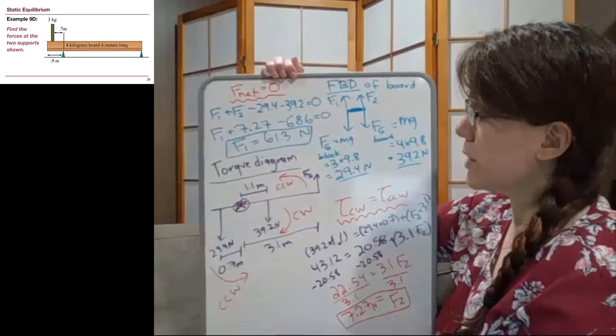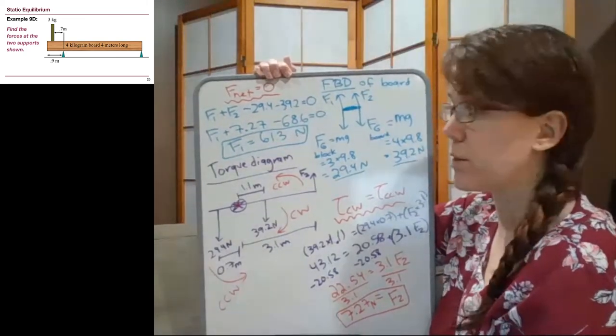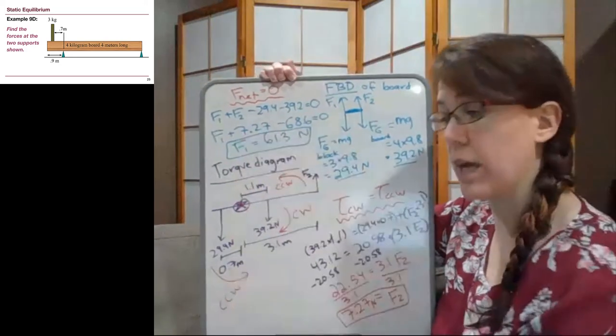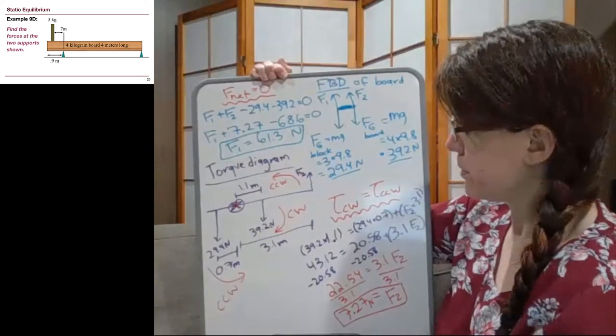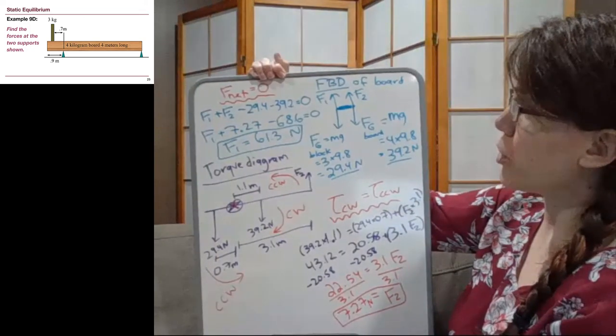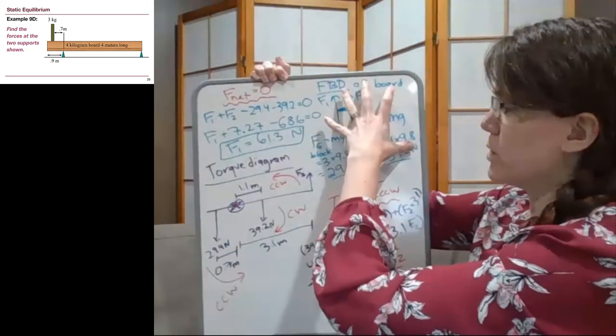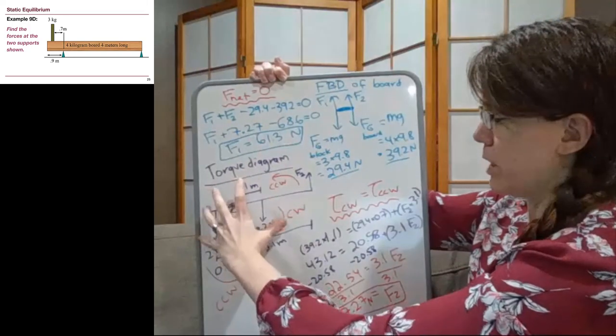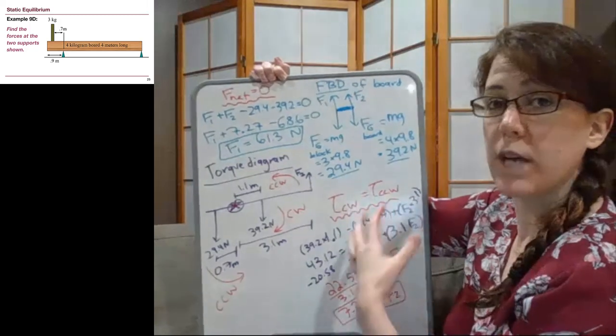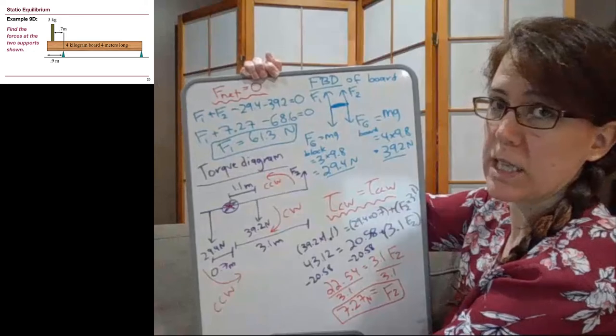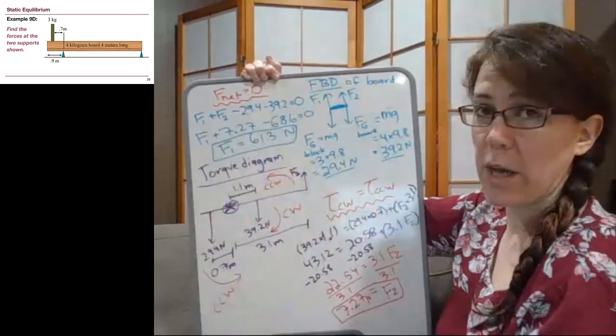And so we see that that more centralized force support is providing more force. It is the thing that's kind of making sure that the board doesn't fall down under the table or rotate due to those weights. So this problem has the same overall process. I had to erase the initial picture for space, but we drew the picture, we drew the force diagram, we drew the torque diagram, we used the condition for static equilibrium for torque, and then because we still had another unknown, we used the other condition for static equilibrium, F net equals 0.